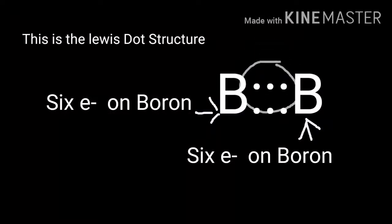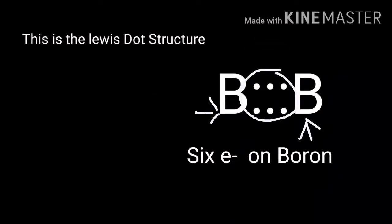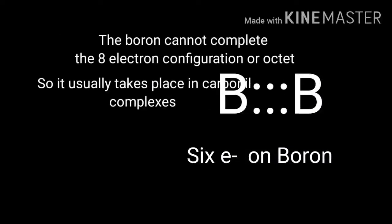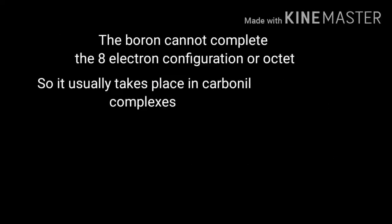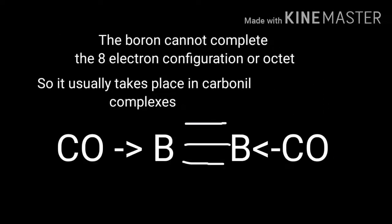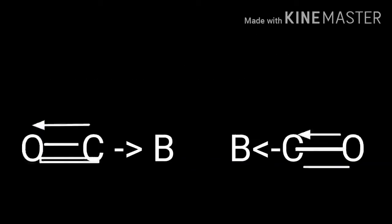This molecule does not follow the octet rule. In this molecule there are only six electrons on the boron atom. As both of the boron atoms cannot complete their octet, it forms carbonyl complexes.